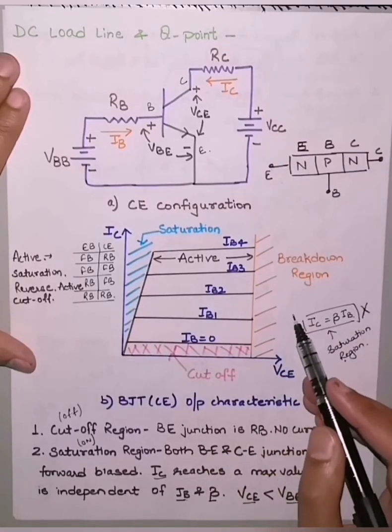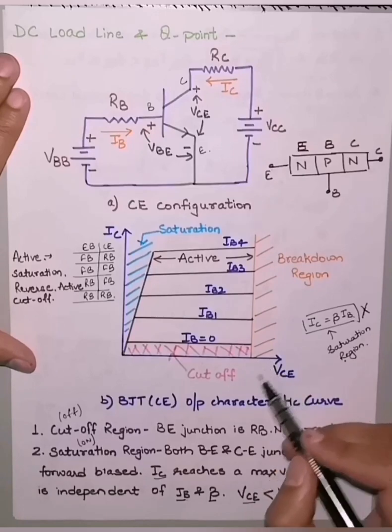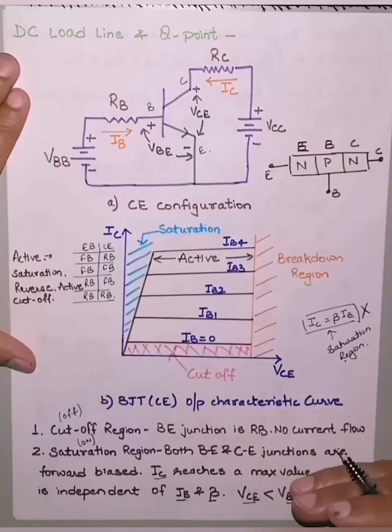The fourth region is the breakdown region. If we increase VCE and IC beyond a certain limit, the transistor breaks down.